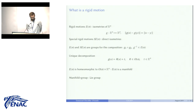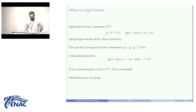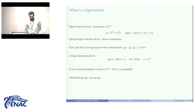A rigid motion is a transformation from R^n which preserves the Euclidean distance. This set is denoted E_n, where E stands for Euclidean and n is the dimension of the space. When the isometries are direct, we write SE_n for special Euclidean. Rigid motions form a group under composition, since composing two isometries yields an isometry, and each isometry has an inverse which is also an isometry.